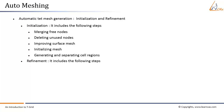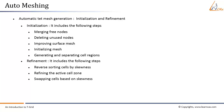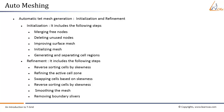Refinement includes the following steps: sorting cells by skewness, refining the active cell zone, swapping cells based on skewness, sorting cells by skewness again, smoothing the mesh, and removing boundary slivers.